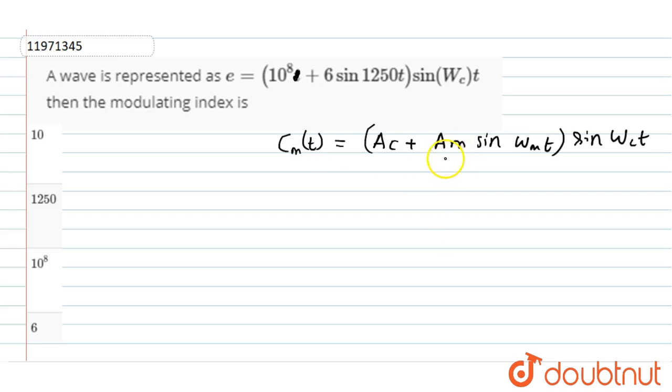CMt equals Ac plus Am sin omega mt into sin omega ct. Sin omega m is the frequency of the modulated wave, which is the frequency of the modulated wave. Omega c is the angular frequency of the carrier wave according to the modulated wave.